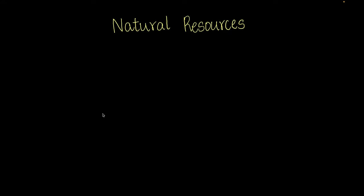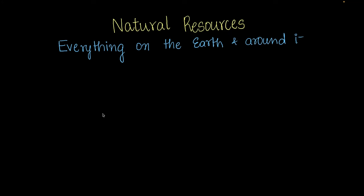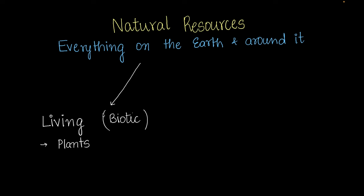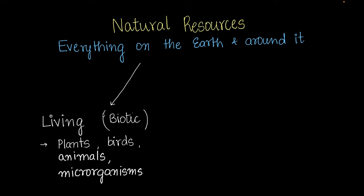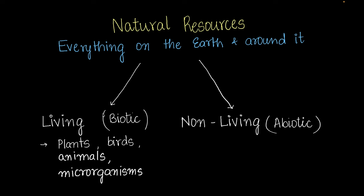Natural resources are basically everything on the earth's surface and around it. All of this is categorized into two categories: the living or biotic category — that's plants, birds, animals, microbes — and the second category, the non-living or abiotic category.